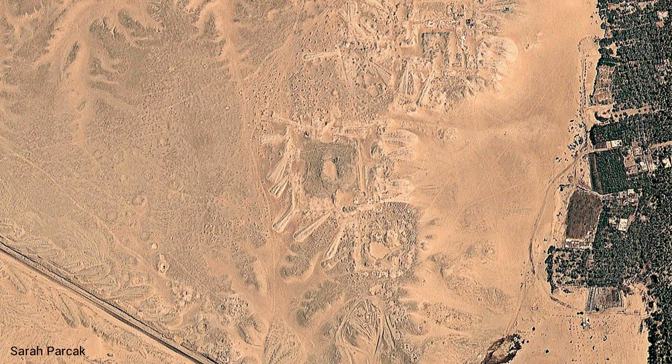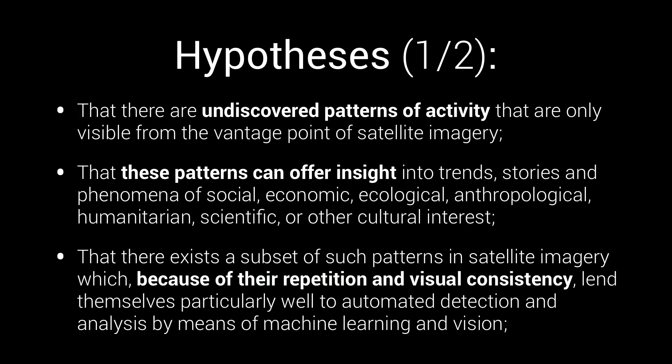These techniques have also been used in archaeology. Egyptologist and space archaeologist Sarah Parchak has used machine learning to discover 17 pyramids and thousands of tombs, all from orbit. In developing TerraPattern, we wanted to test the following hypotheses: that there are undiscovered patterns of activity only visible from satellite imagery, and that these patterns can offer insight into trends, stories, and phenomena of social, economic, ecological, anthropological, humanitarian, scientific, or other cultural interests.